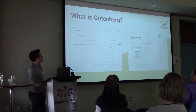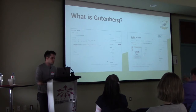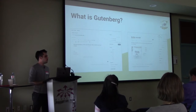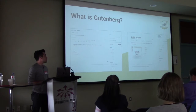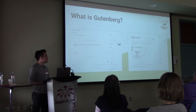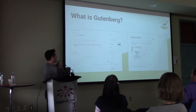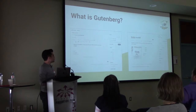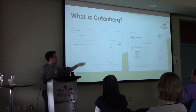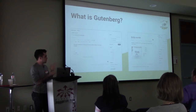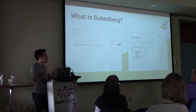The first question is: what is Gutenberg? You're going to hear many different ways to describe it. My version is: it's just a different way to edit content in WordPress. That's it. On the left is how the editor used to look, and on the right is the Gutenberg way. On the left it's sequential text — you write and format. On the right you're building blocks, your content is divided into blocks, you rearrange them, you can reuse them.